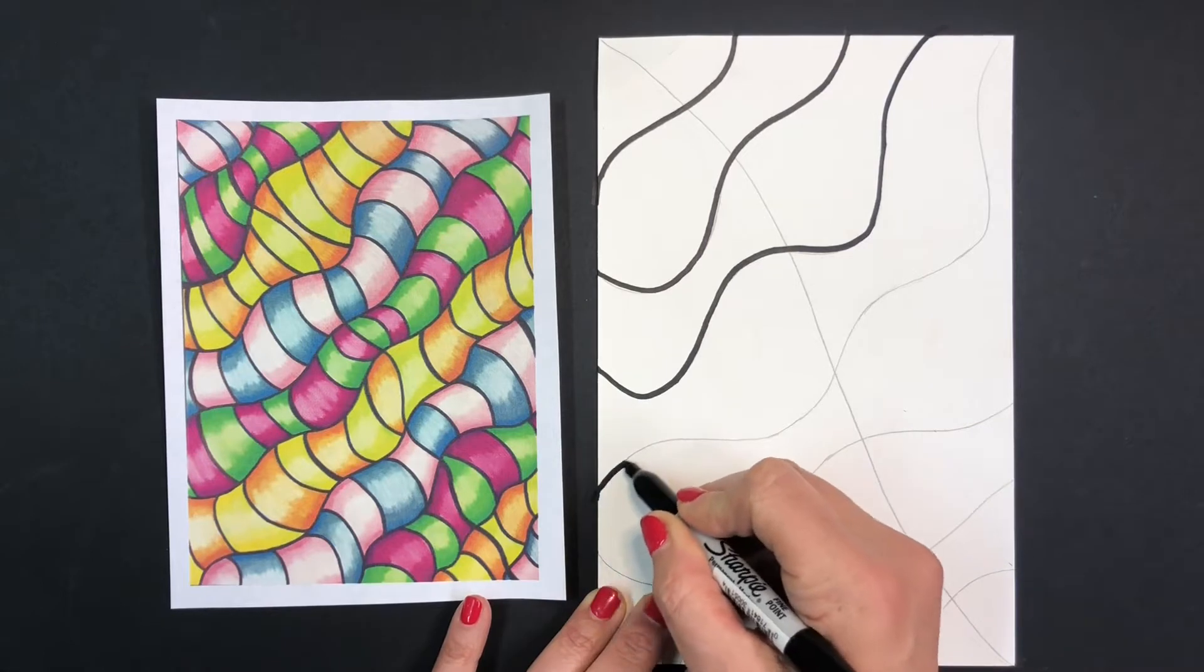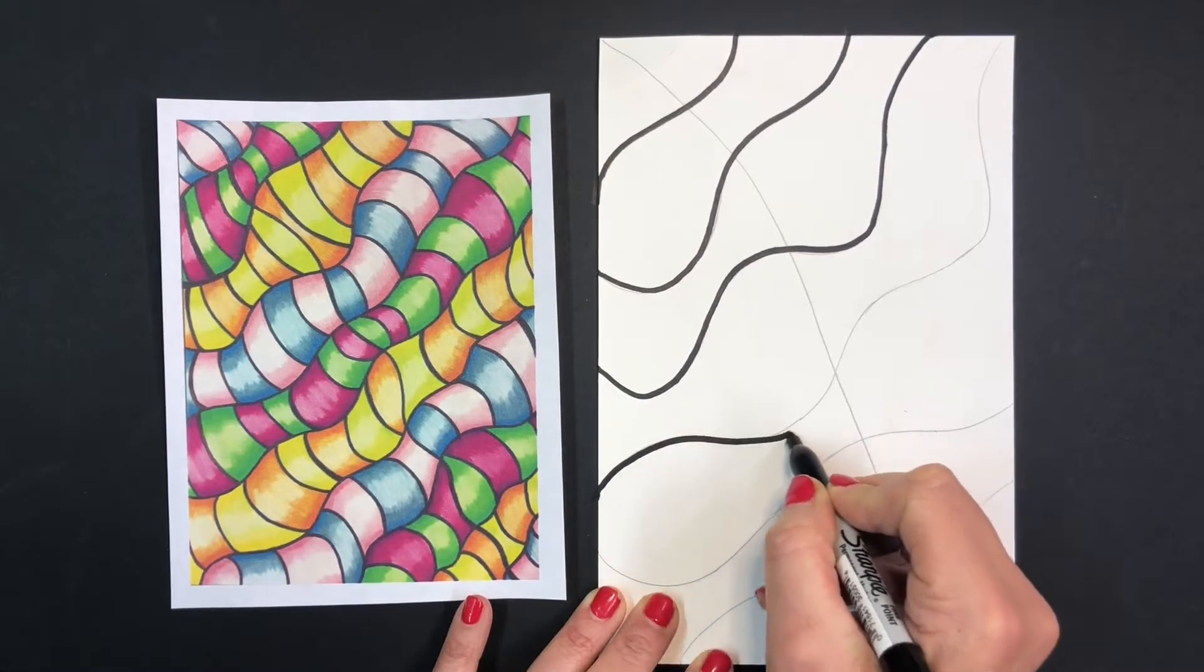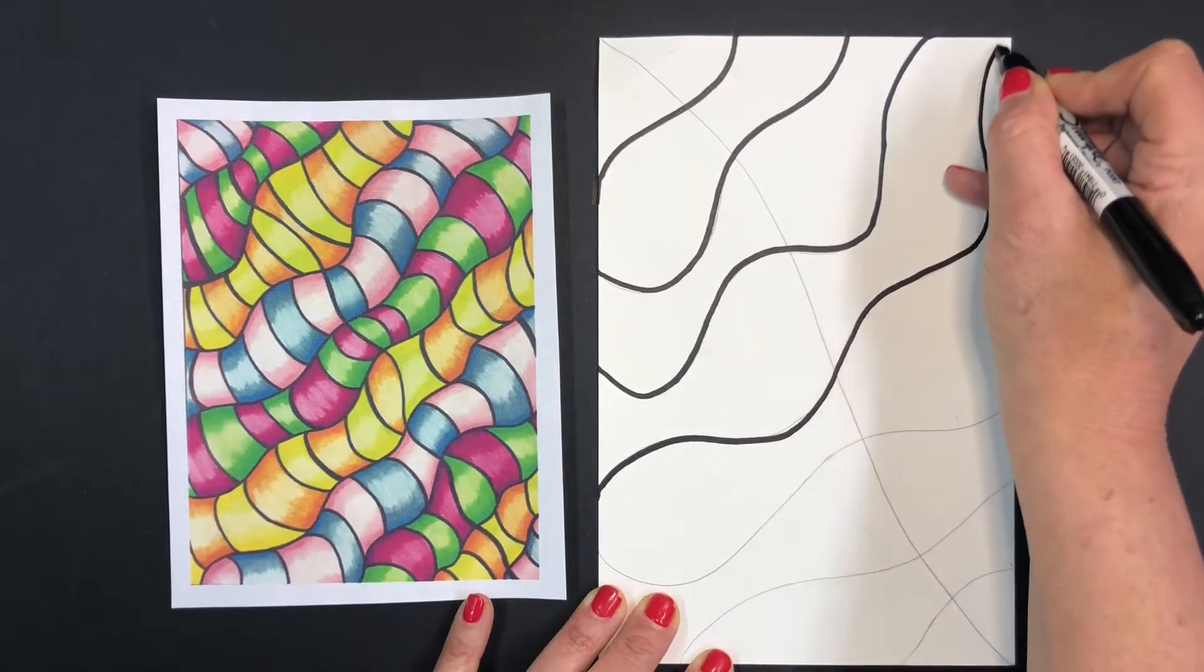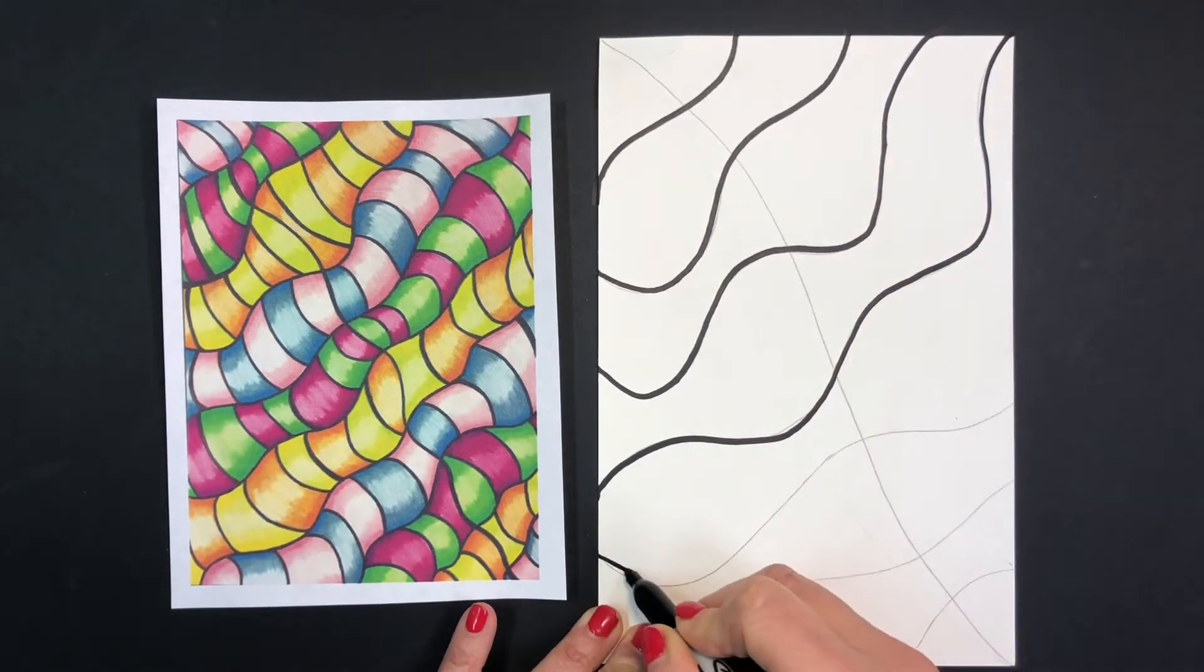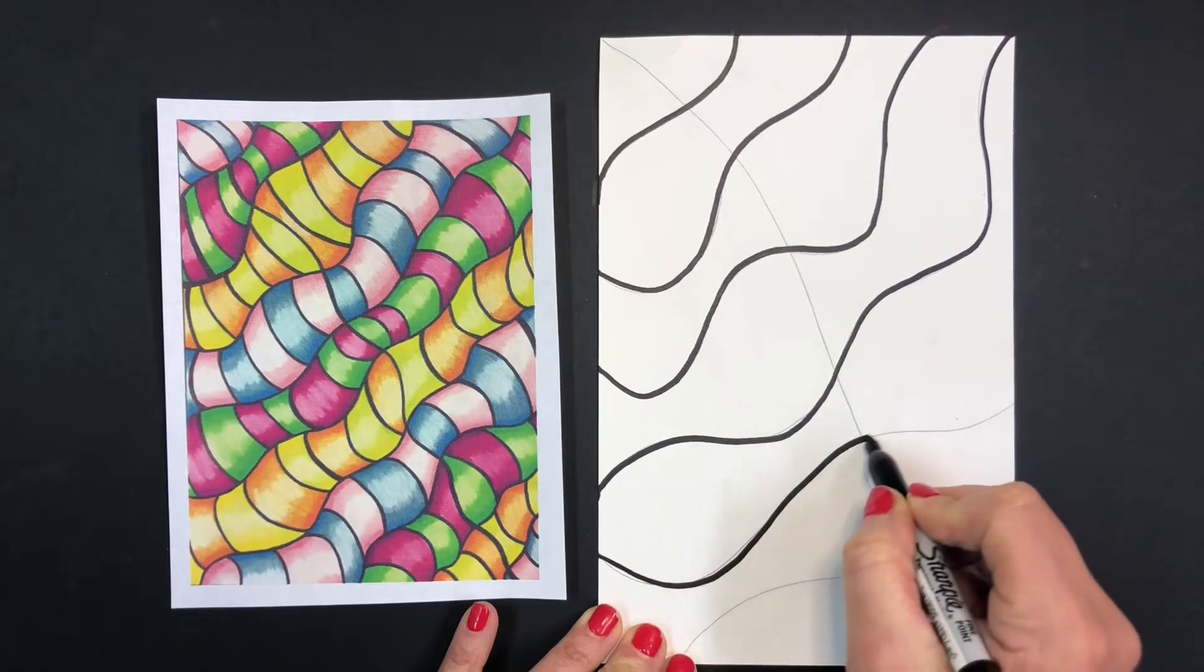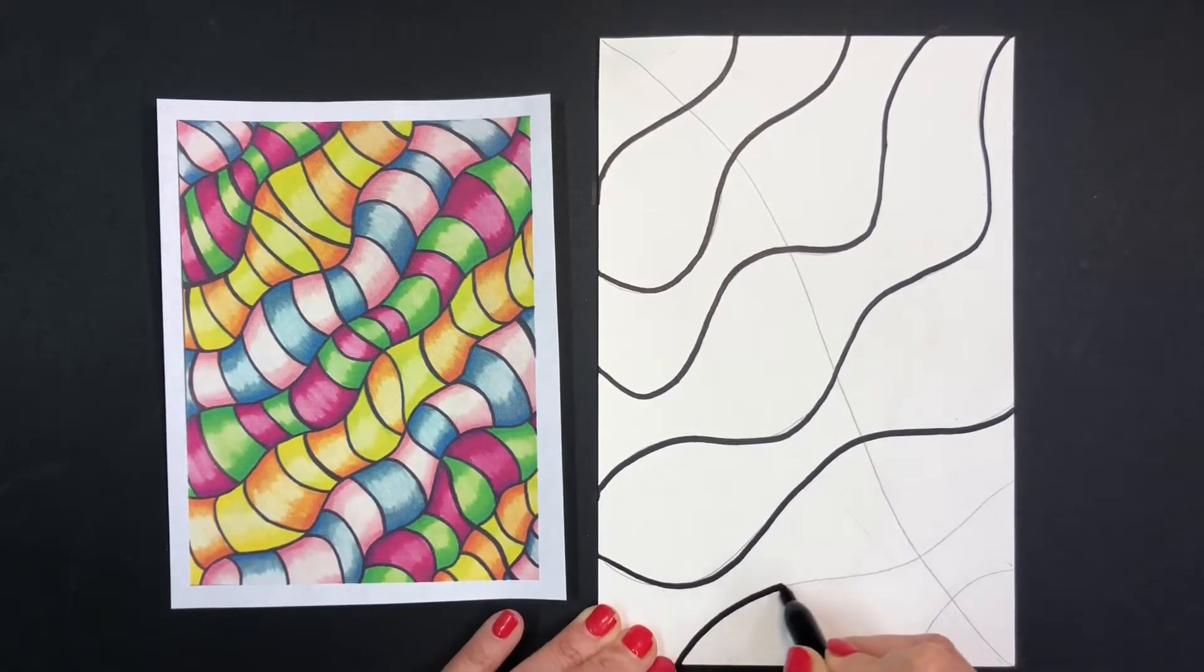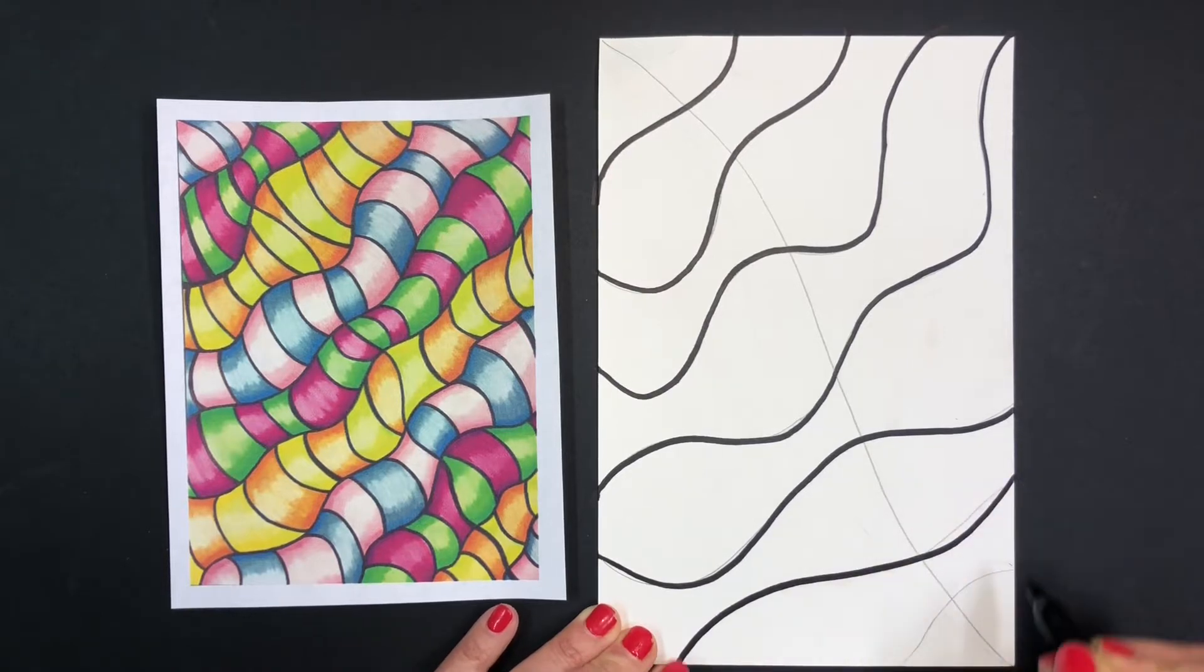And what's so fun about this project is that you really can't mess it up. After you're done doing your curved lines, you're going to draw one line down the center of your curved lines.